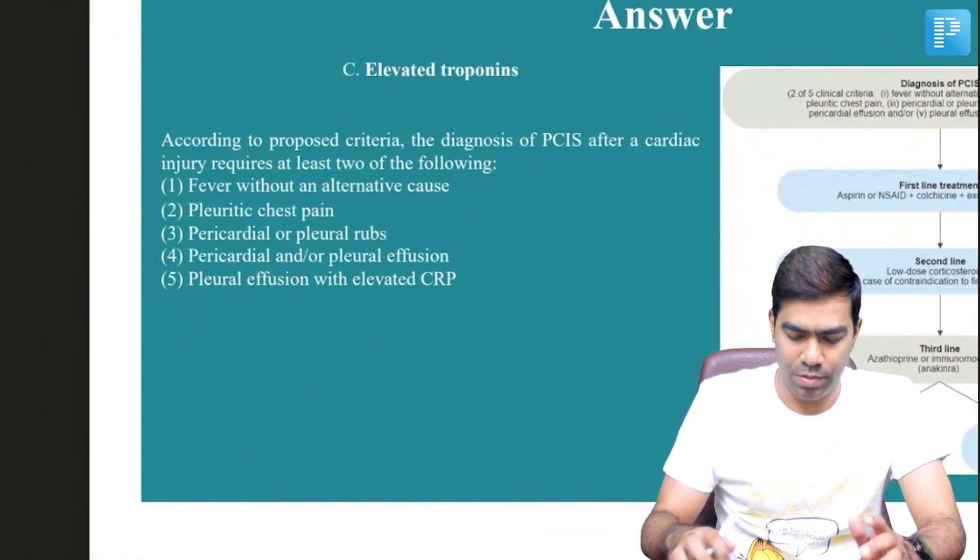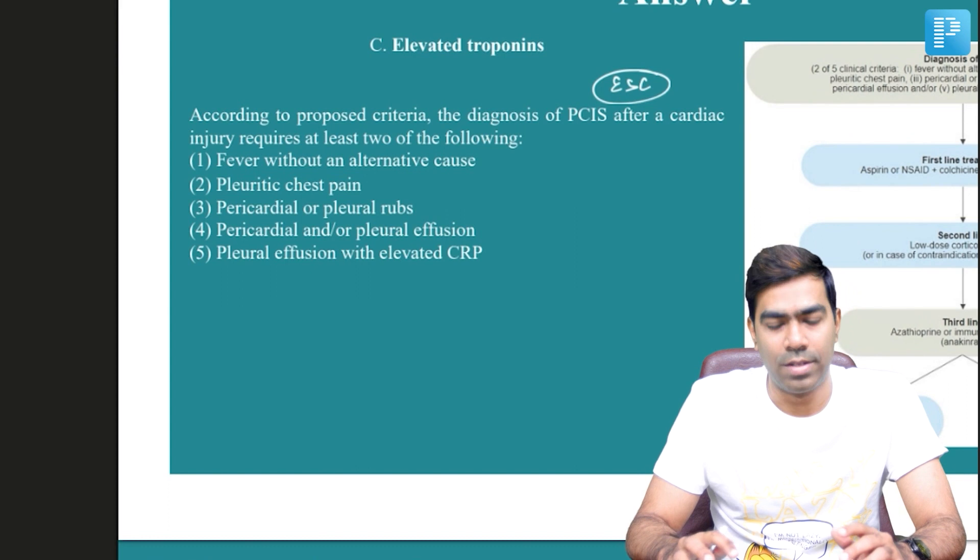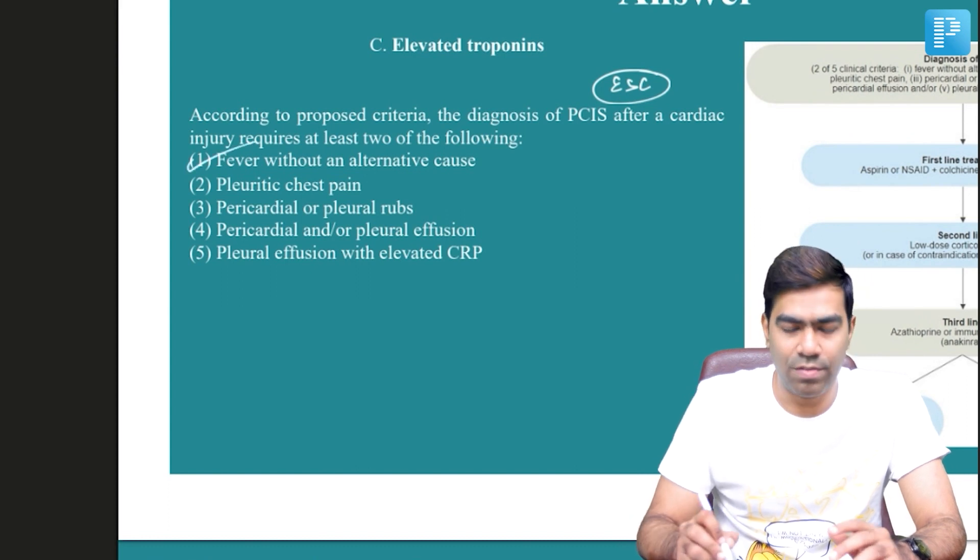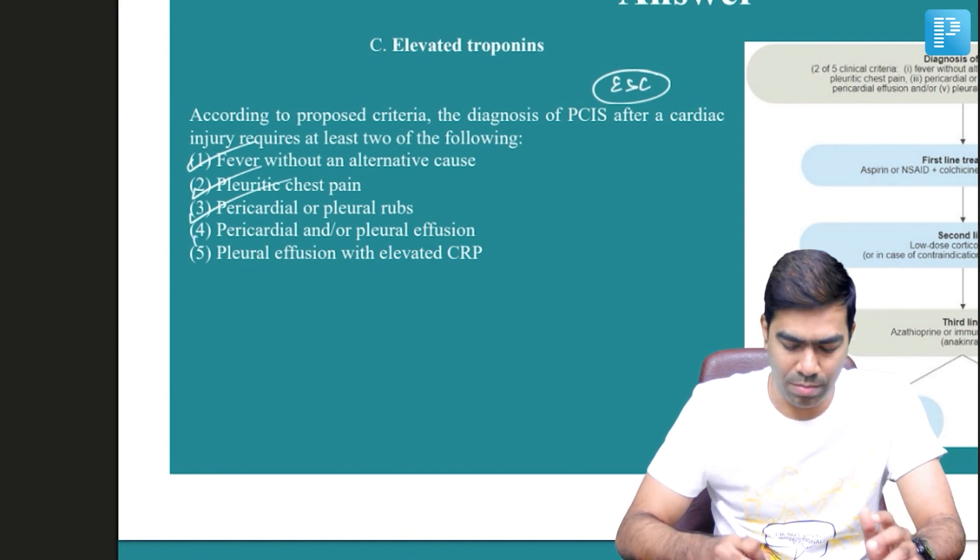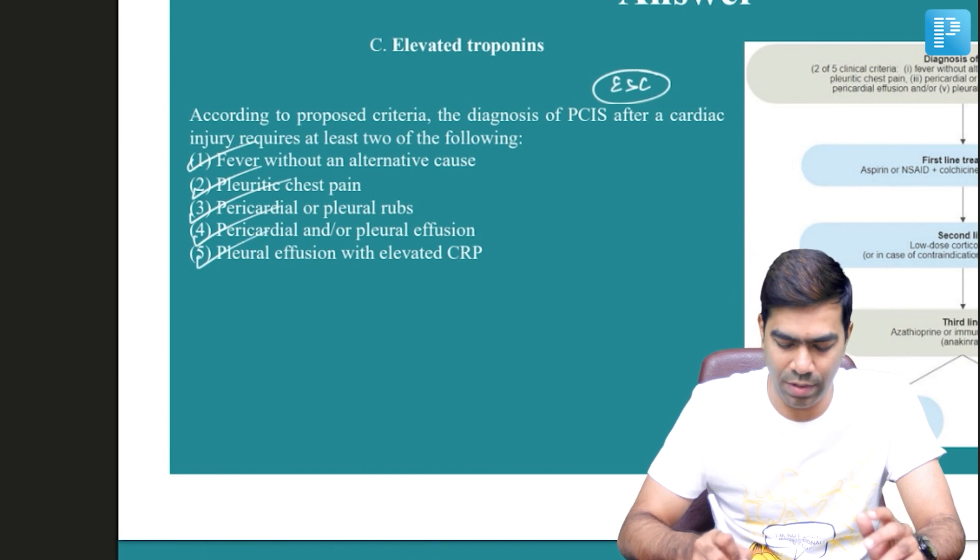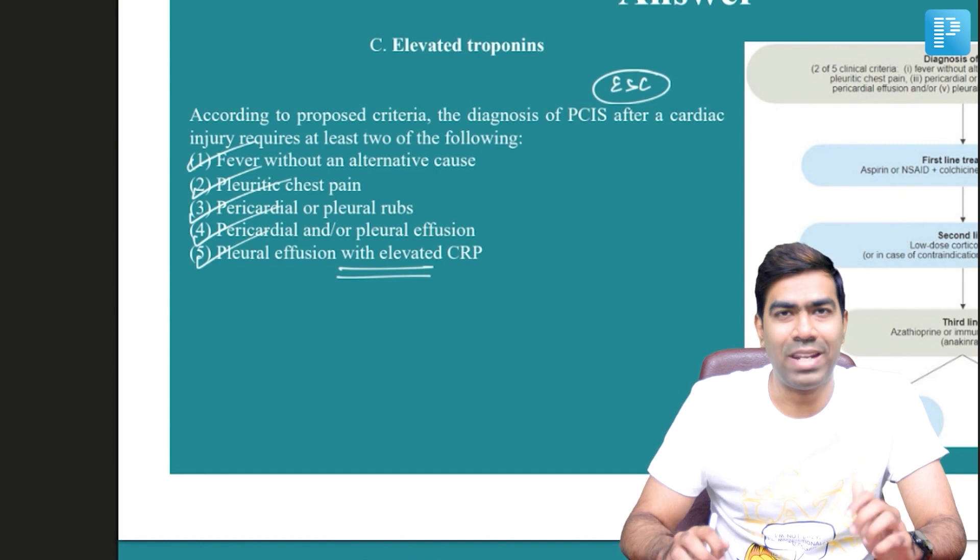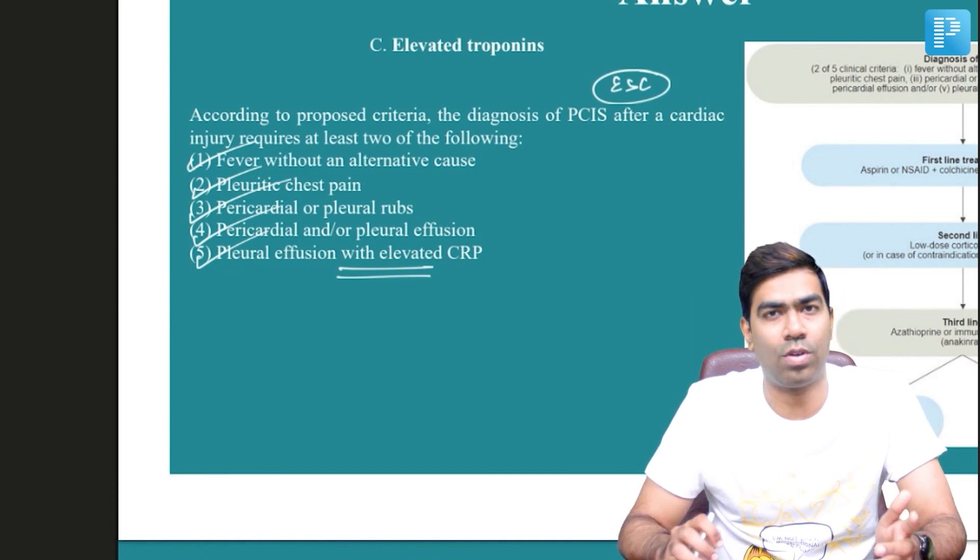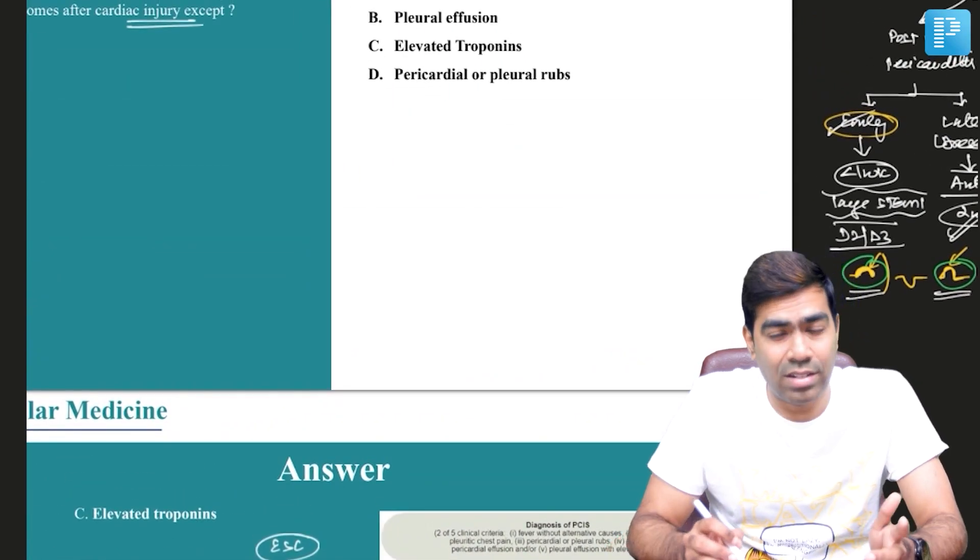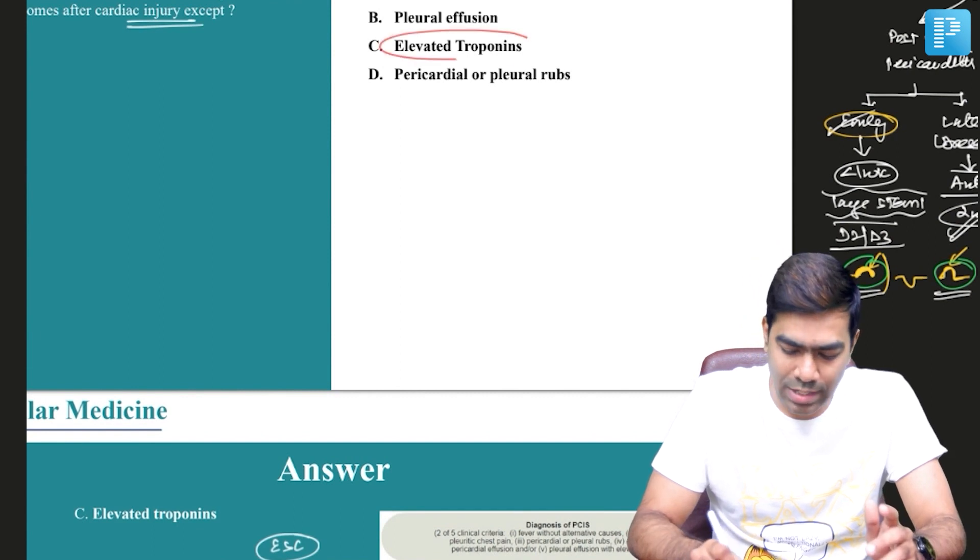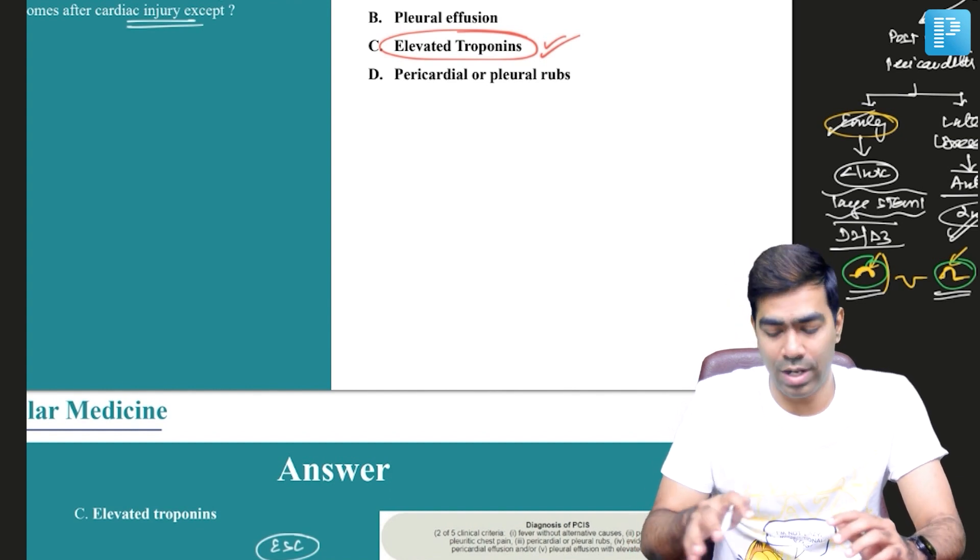So this is post-traumatic pericarditis. What are the criteria to diagnose post cardiac injury syndrome? This is proposed by European Society of Cardiology. This is not a standard criteria, but still you need to know about this. Number one is fever without an alternative cause. Number two, presence of pleuritic chest pain. Number three, presence of pericardial or pleural rubs. Number four, presence of pericardial and/or pleural effusion. Number five, pleural effusion with an elevated CRP. Remember, it's a pericarditis syndrome or a pericardial problem, so even though there could be underlying myocardial injury, that doesn't define this post cardiac injury syndrome.